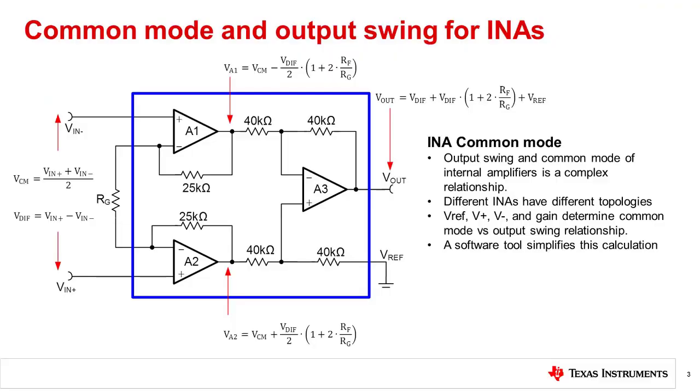In the earlier TI Precision Labs video titled Determining a SAR ADC's Linear Range When Using Operational Amplifiers, we looked at common mode and output swing limitations of op amps. Instrumentation amplifiers are composed of multiple op amps. This figure shows a common type of INA configuration. Each amplifier inside the INA has its own input and output swing limitations.